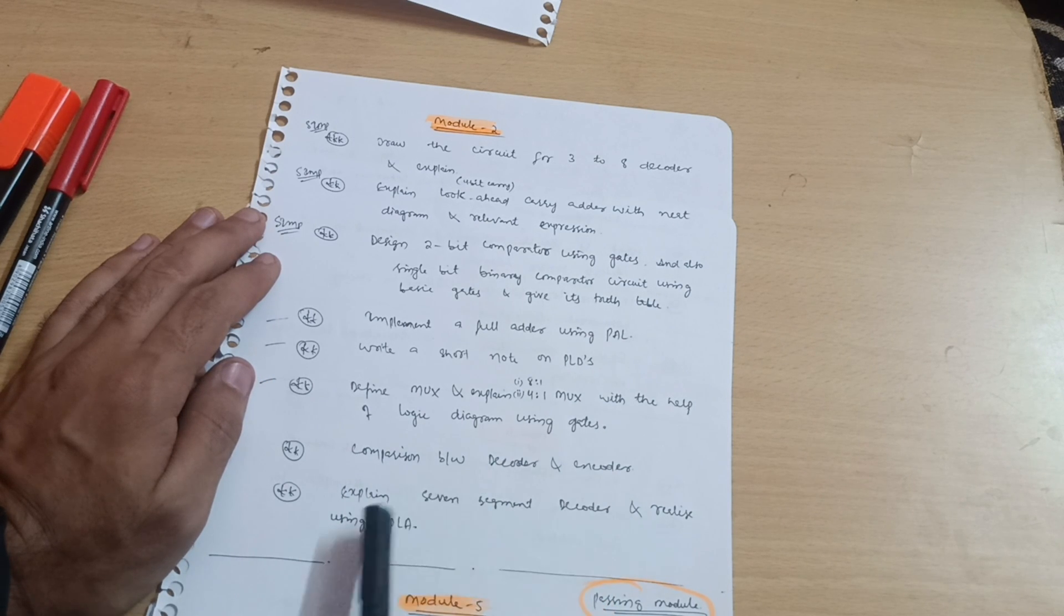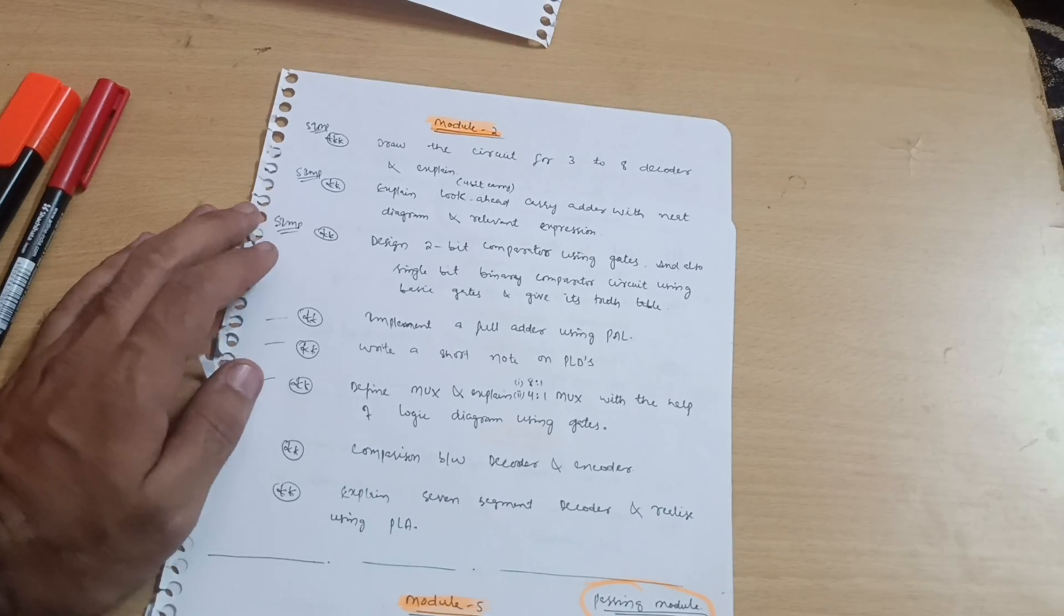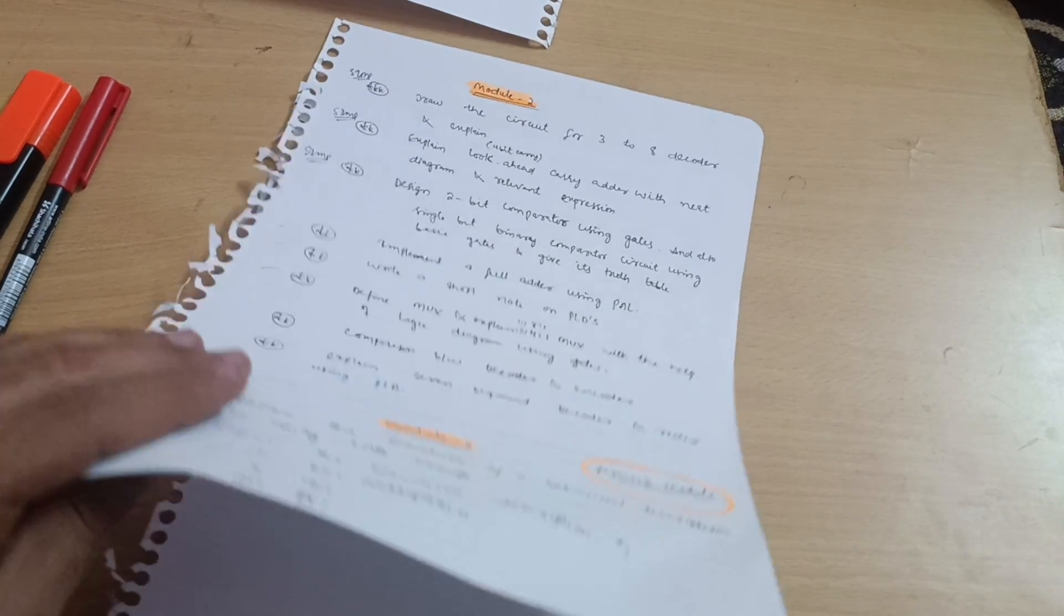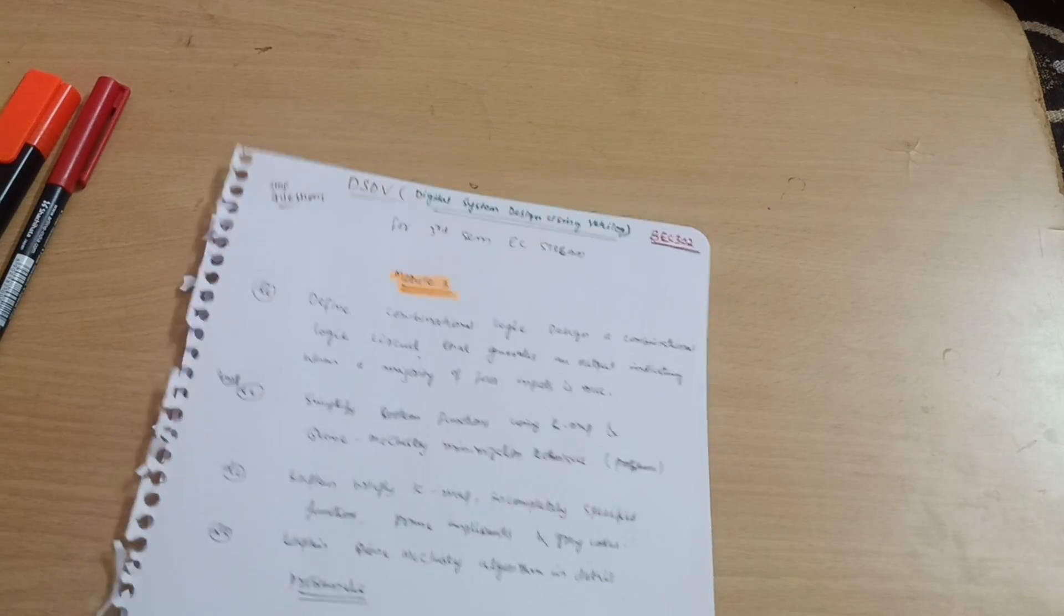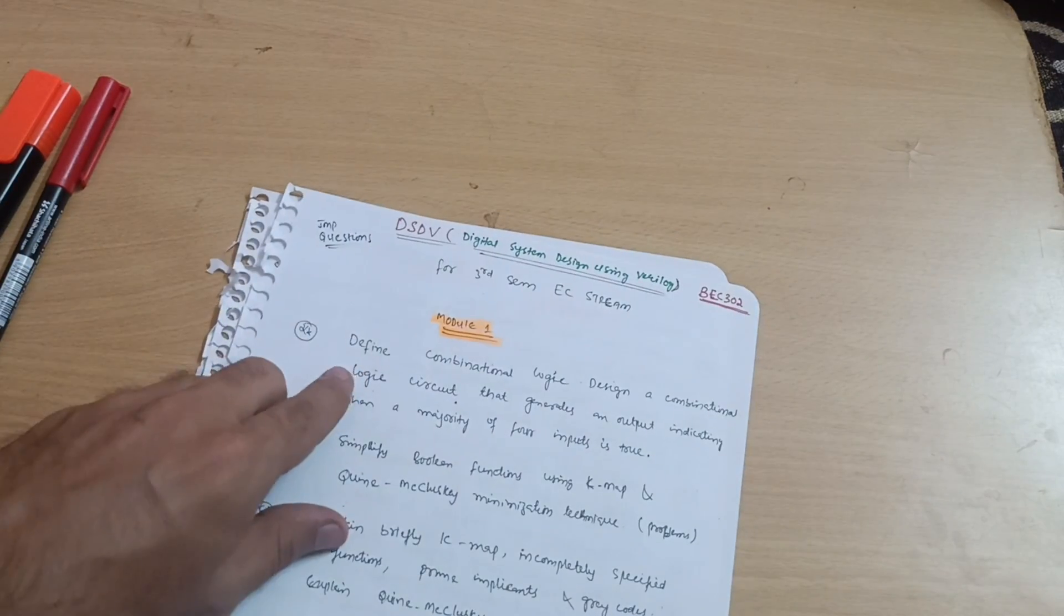Explain seven-segment decoder and realize using PLA. This is all about module second. At least go through these types of important questions which will definitely help you in passing the examination. Now if I come to module first, some theory questions are there but it is totally problematic.